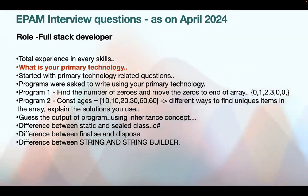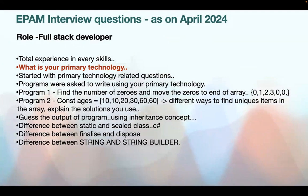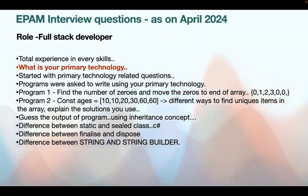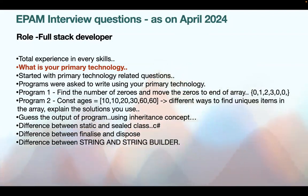The first programming question was from arrays: find the number of zeros and move the zeros to the end of the array. The second question was removing duplicates from an array. You should explain how many ways you know for removing duplicate elements — you can use a Set, you can use loops. There are multiple ways, so explain the solutions you are aware of.